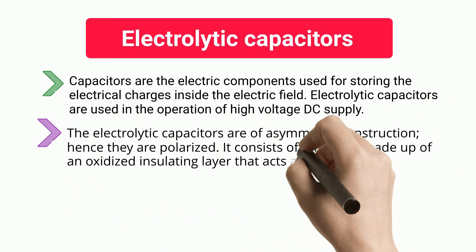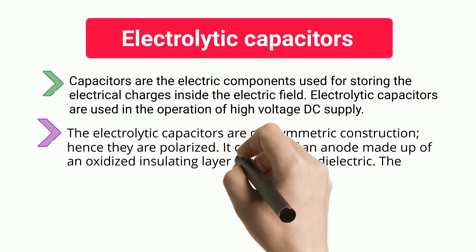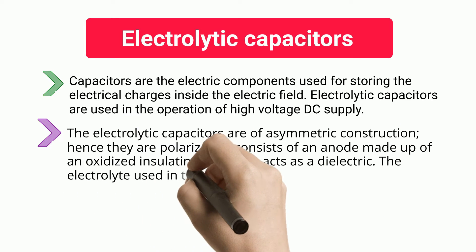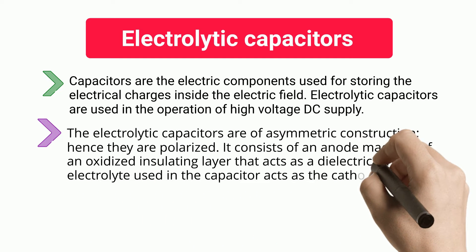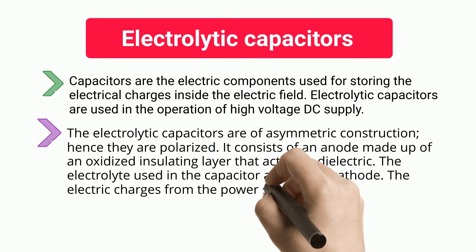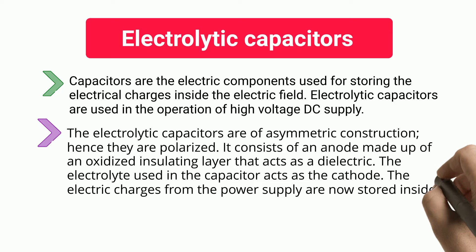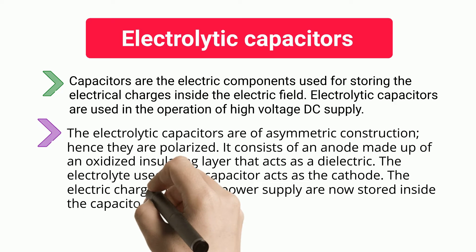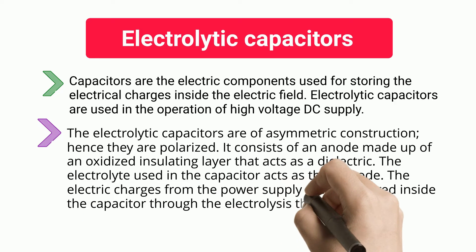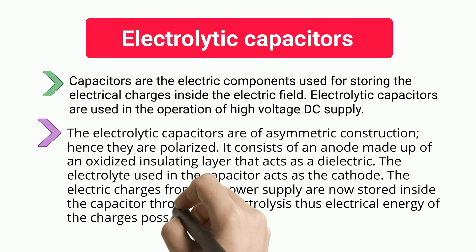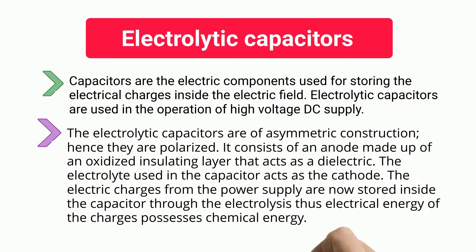The electrolytic capacitor consists of an anode made up of an oxidized insulating layer that acts as a dielectric. The electrolyte used in the capacitor acts as the cathode. The electric charges from the power supply are stored inside the capacitor through electrolysis, and thus the electrical energy of the charges possesses chemical energy.